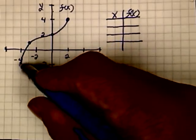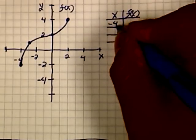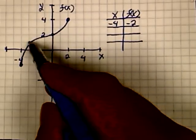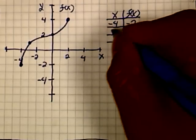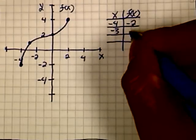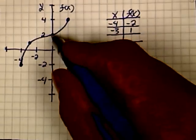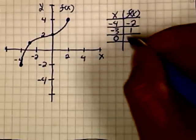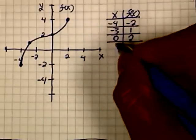So, I now have 4 points: negative 4, negative 2; negative 3, positive 1; 0, 2; and 2, 4.